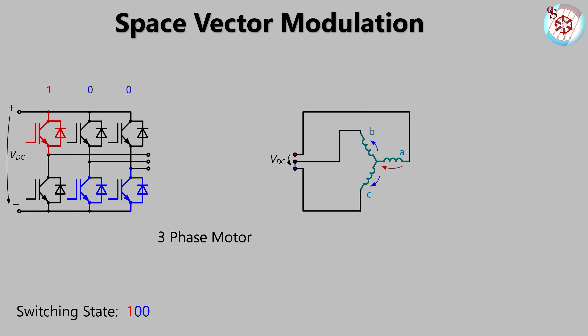The DC link voltage is applied across A and connected B and C. This is a voltage divider. Assuming a symmetrical motor, VDC is divided into positive two-third VDC for coil A and two negative one-third VDCs for coils B and C.